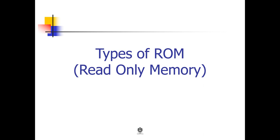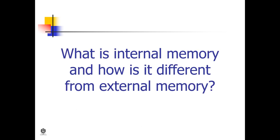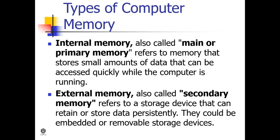Hello everyone, today we'll have a new lesson about types of ROM, or read-only memory. What is internal memory and how is it different from external memory? Computer memory is generally classified as either internal or external memory. Internal memory, also called main or primary memory, refers to memory that stores small amounts of data that can be accessed quickly while the computer is running.